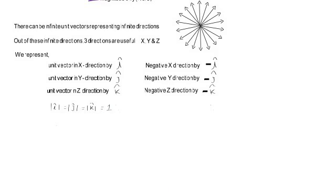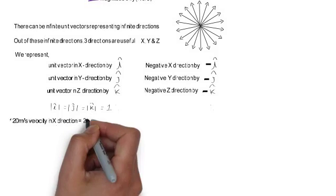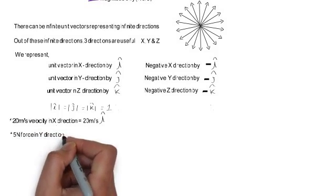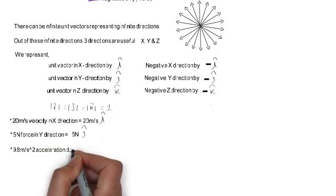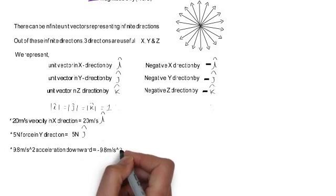They have no dimension or unit. They can be used to represent different directions along the x axis, y axis, and z axis. A 20 meter per second velocity in the x direction can be written as 20 meter per second i cap — 20 meter per second is the magnitude part, multiplied by i cap which is the direction part. A 5 Newton force in the y direction can be written as 5 Newton j cap, where j cap represents that the force is in the y direction.